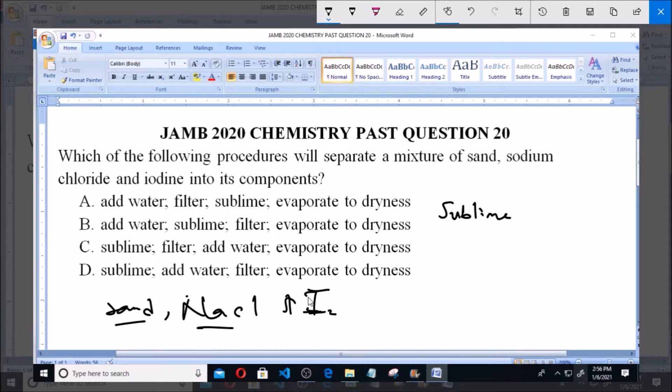Now the next thing to do is to add water. Let's check which of these two components is soluble in water - is it sand or sodium chloride? Addition of water will enable us to determine which is soluble. When water is added, you'll discover that sodium chloride, which is common salt, is soluble in water, while sand is insoluble.